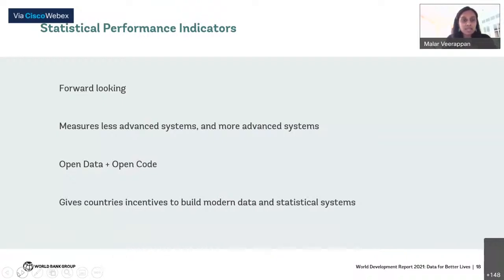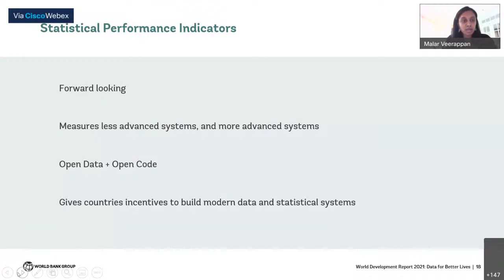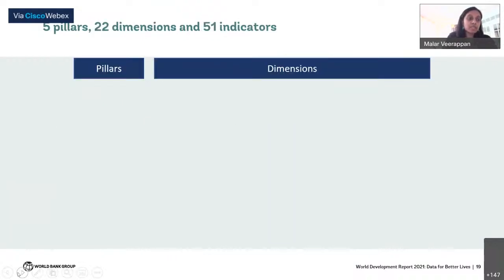The SPI is part of efforts to create a tool for countries and development partners to assess data and statistical systems and identify areas for improvement. This is an overhaul of the Statistical Capacity Indicators in place since 2004, informed by various dialogues in international fora. The Statistical Performance Indicators framework is forward-looking, relevant for this decade, and measures all national data and statistical systems including both less advanced and highly advanced systems. We place strong emphasis on transparency — the SPI is open data, open code — where users can freely access data and replicate how every step was constructed.